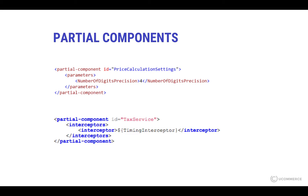Conceptually you can think of partial components almost like partial classes in .NET, where you have part of the registration in one file and another part in another file and they get merged together. You can also do the same thing for the tax service and add other types of parameters, such as the interceptor parameter.